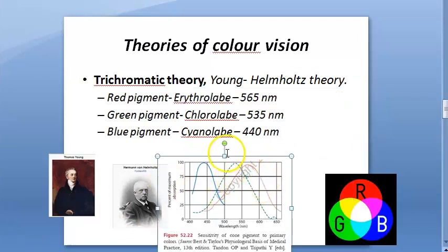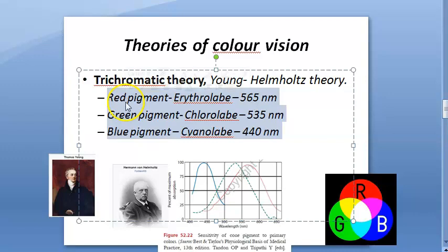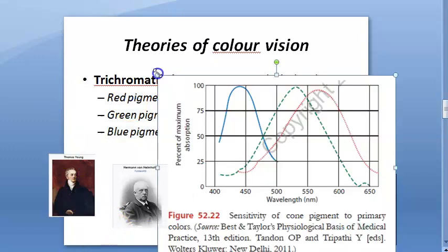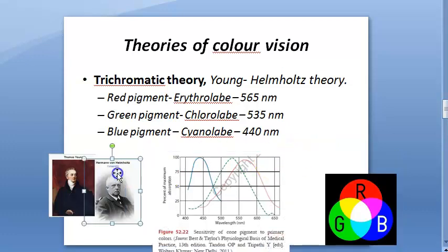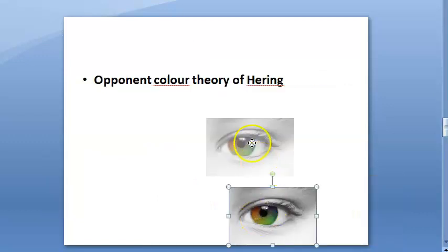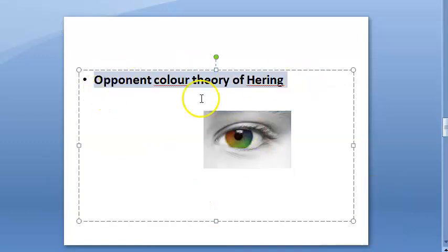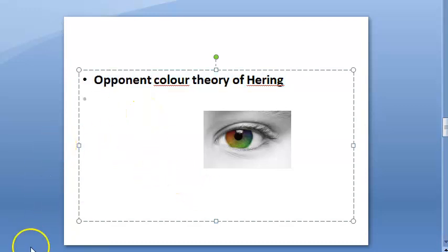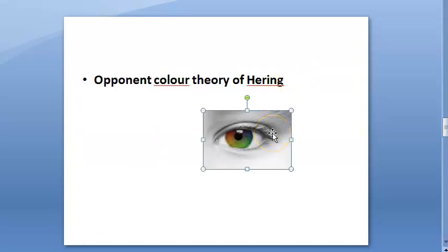It has also been mentioned that these are the primary cones, but there are some cones with maximal sensitivity in the yellow portion of the spectrum. Now, the opponent color theory of Hering states that colors are mutually exclusive - there is nothing called a reddish-green. This is something difficult to explain with the trichromatic theory alone.